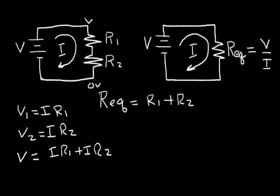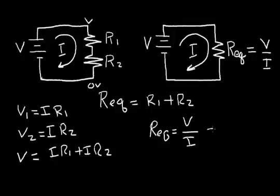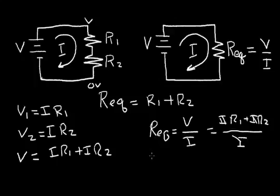Now on the right side, we said the equivalent R_eq is equal to V over I. So let's write that R equivalent is equal to V over I. I can substitute the expression for voltage from the left side and get I·R1 plus I·R2, all divided by I. And the I's cancel, leaving R equivalent equal to R1 plus R2.